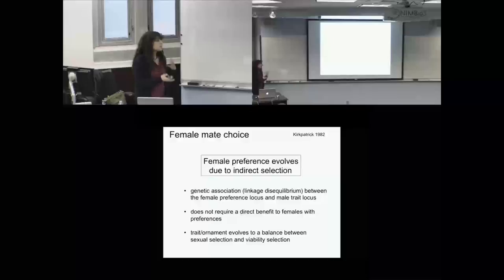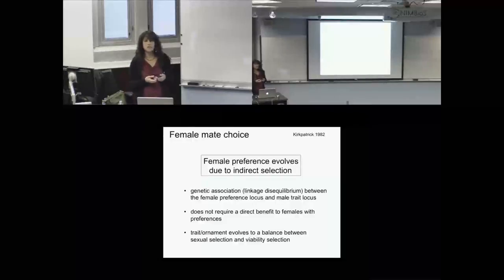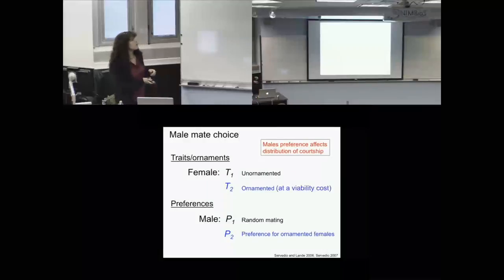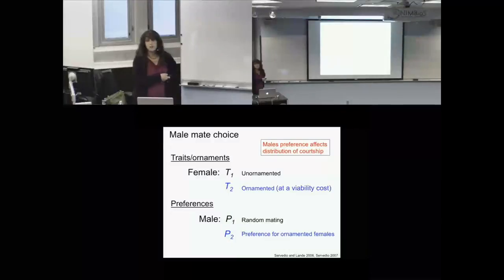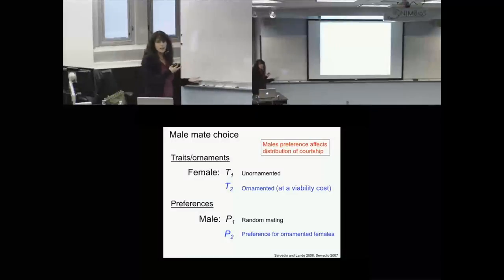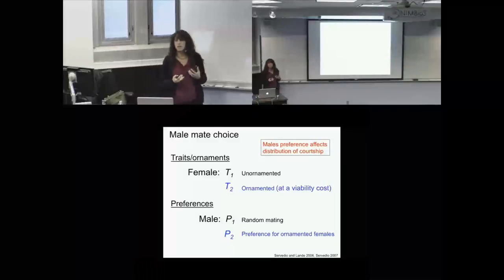Russ Lande and I set out to explore what happens if we reverse the sexes while keeping the assumption of polygyny, specifically interested in the situation where males have a limited amount of energy to put into courtship. In the flipped sex role model, traits or ornaments are expressed in females: T1 unornamented females, T2 has an ornament with a viability cost, very parallel to the arbitrary male trait. Preferences are now expressed in males: P1 is random mating, P2 is a preference for ornamented females.